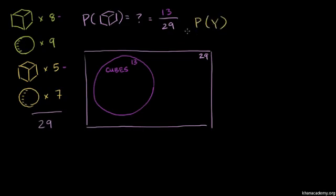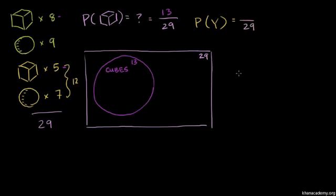The next probability is the probability of getting a yellow piece. There are two different kinds of yellow objects: 5 yellow cubes and 7 yellow spheres. So the total number of yellow objects is 5 plus 7, which equals 12.